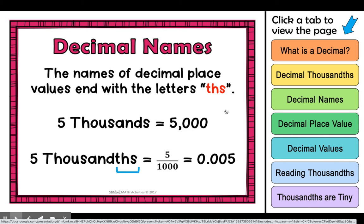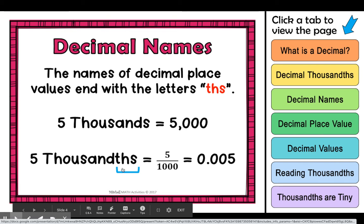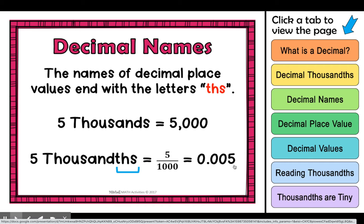Now make sure when you're pronouncing these, you're really emphasizing the thousandths, the T-H-S at the end. So this number would be read five thousandths.